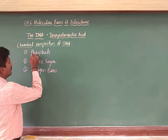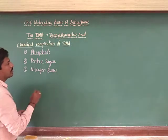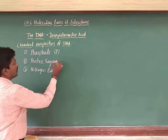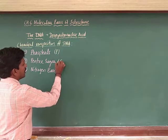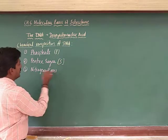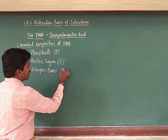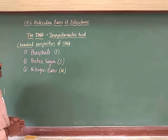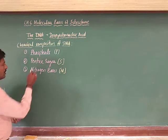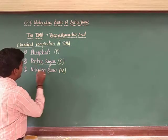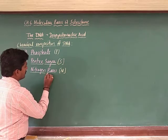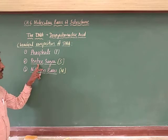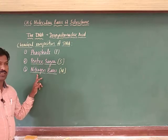Phosphate, which I will show as P; pentose sugar; and nitrogen bases, which I will denote as N. These are the three components observed in any nucleic acid, and the same way in DNA: phosphate is present, pentose sugar is there, and nitrogen bases are present.